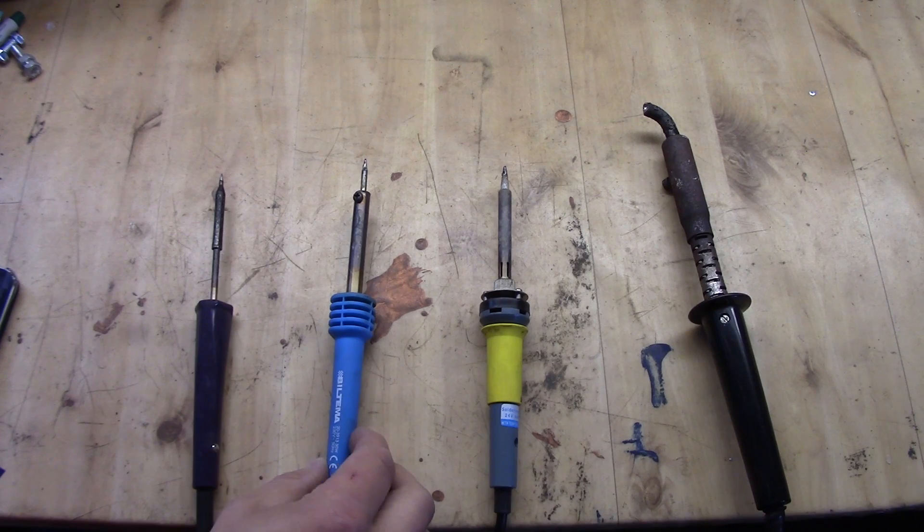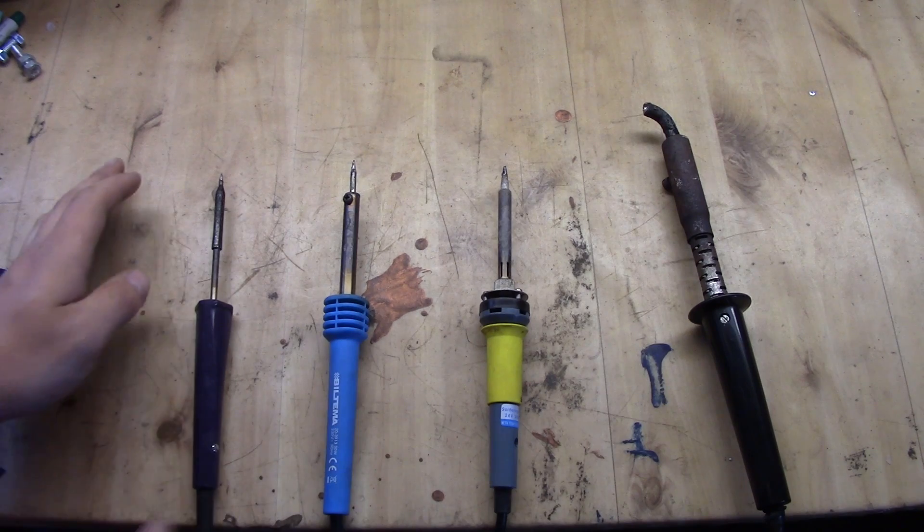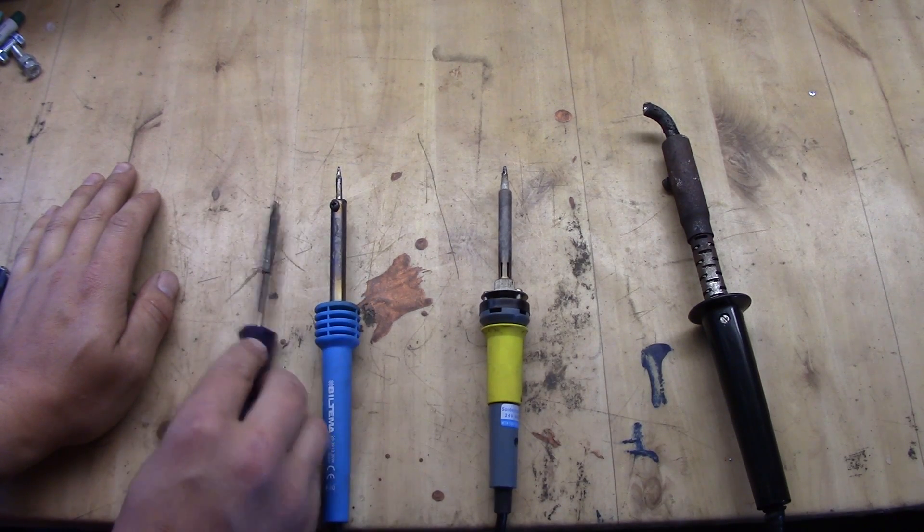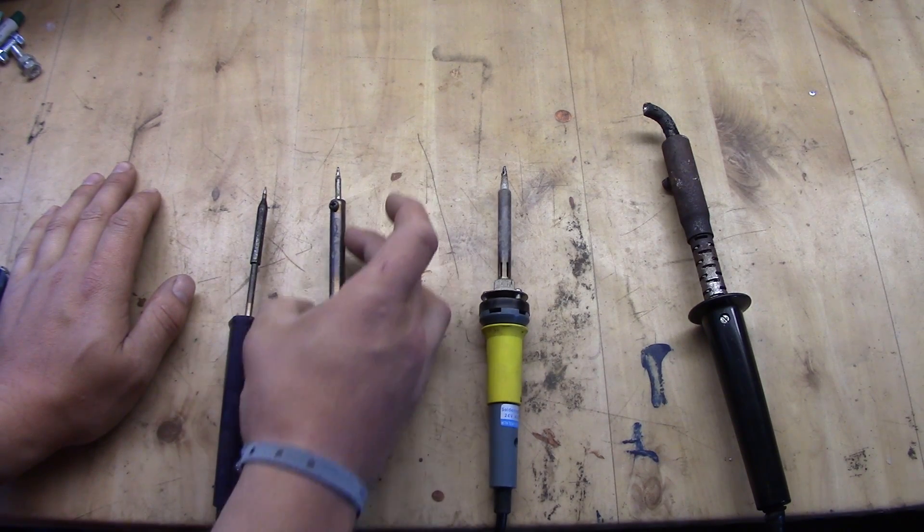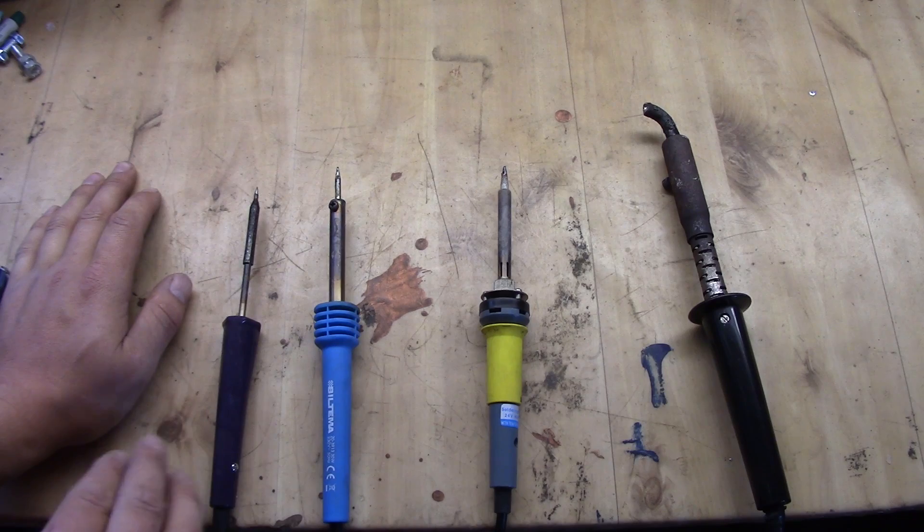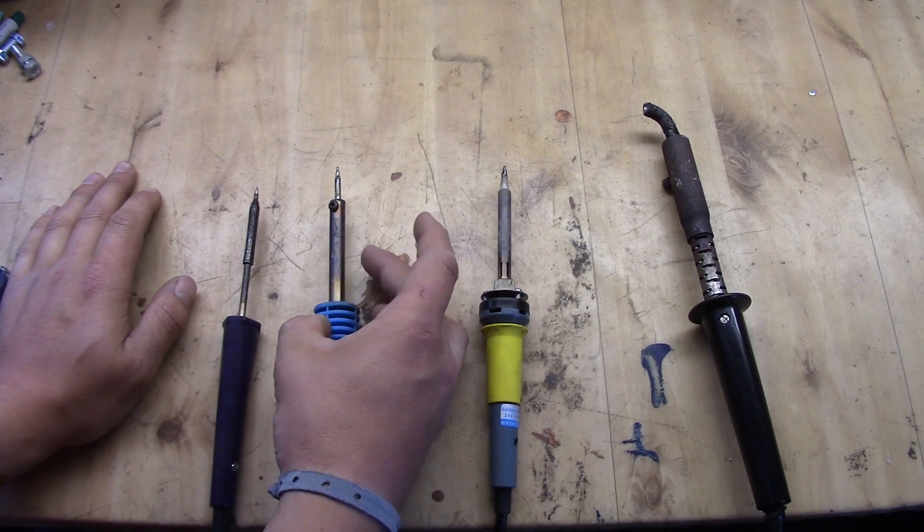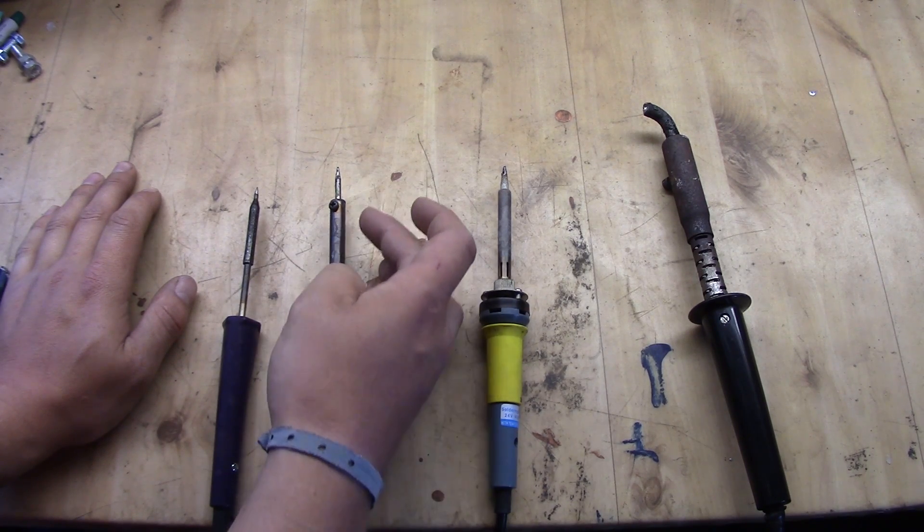This one here on the other hand is a 30 watt iron. And even though 30 watt doesn't sound that much, a big difference you see between those two is the actual mass of this here. The thing about soldering is not always about the watt on the iron, it's actually about how much mass do you have on it, because that's the one that is going to transfer the heat over to the subject.